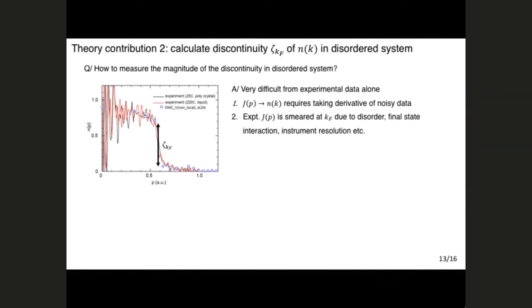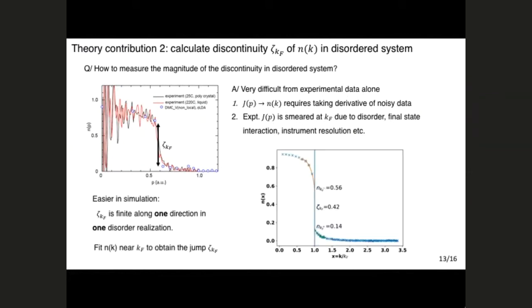The second thing we were able to do is to extract the magnitude of the discontinuity in the momentum distribution. So this is very difficult from the experimental data alone, because to go from the Compton profile to the momentum distribution, you have to take a derivative of noisy measurement data. And so this is what they get, whereas we can just see it. The second thing is that there are a number of experimental effects, artifacts and stuff, that will reduce, they will smooth out their Compton profile right at the Fermi surface. So they really can't see this very well. Whereas for us, it's easy, because we just take one disorder realization, we look in one direction, there's no spherical, there's no directional averaging, there's no disorder averaging. Then we can clearly see this jump, we can get it out, and then histogram it for all the disorder realizations and take an average.